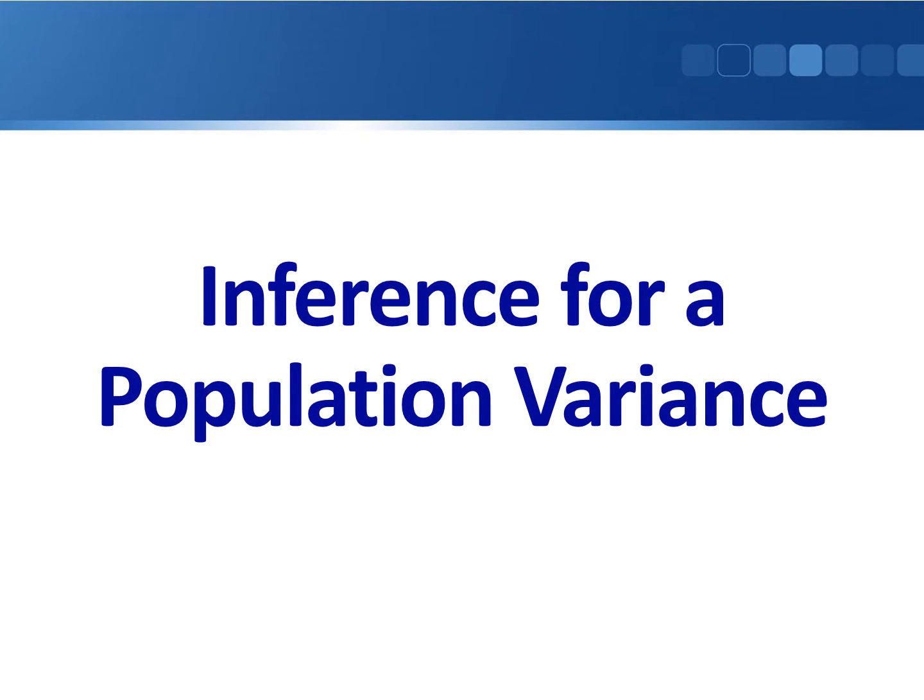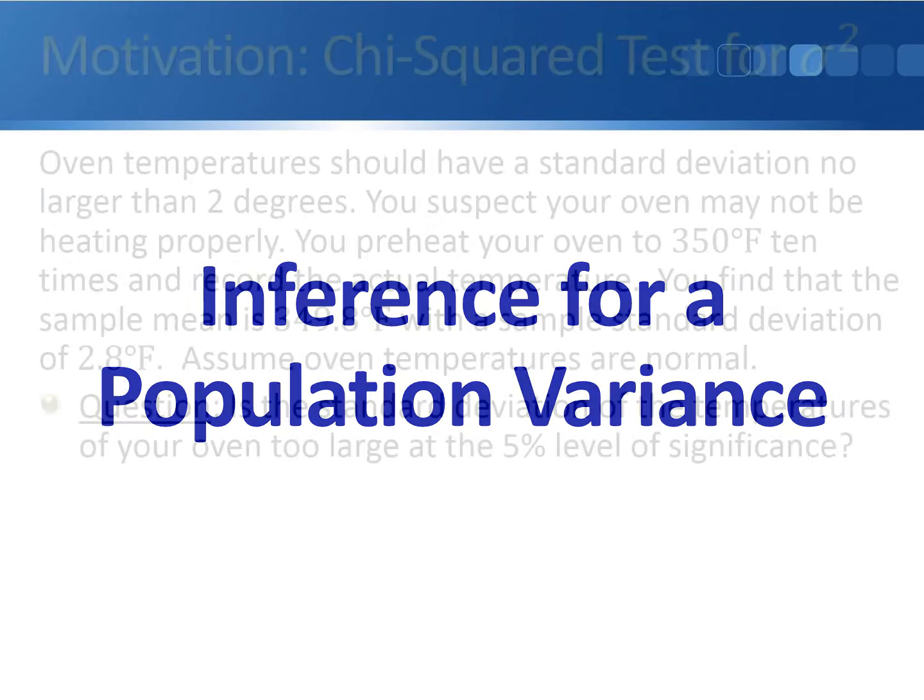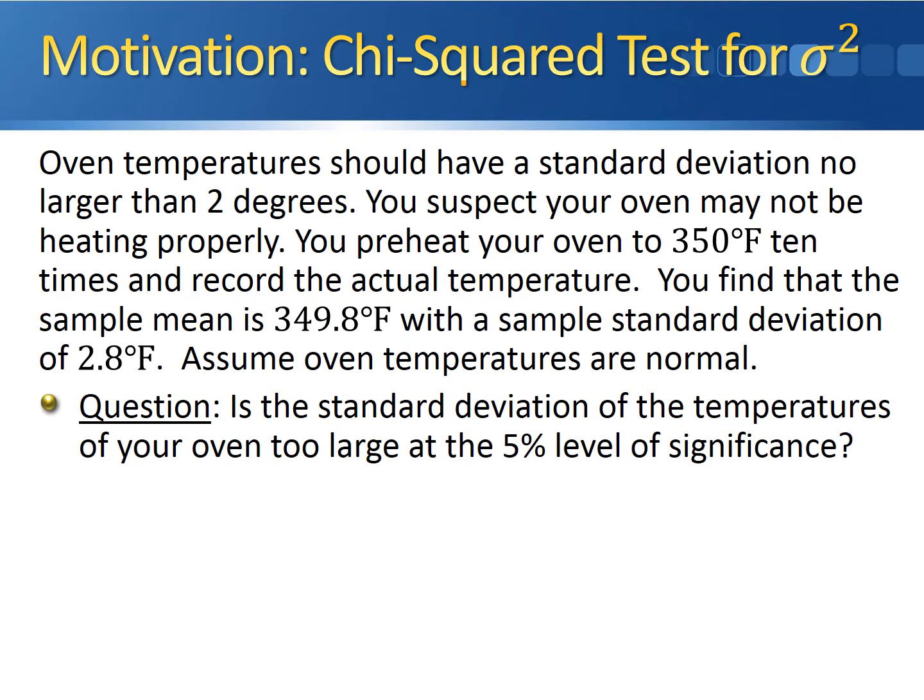This video is going to show you how to perform a hypothesis test on a single population variance. Consider this scenario: oven temperatures should have a standard deviation no larger than 2 degrees. You suspect that your oven may not be heating properly, so you preheat your oven to 350 degrees 10 times and record the actual temperature. You find that the sample mean is 349.8 degrees with a sample standard deviation of 2.8 degrees. Assume that oven temperatures are normally distributed.